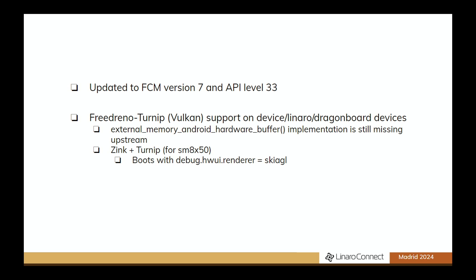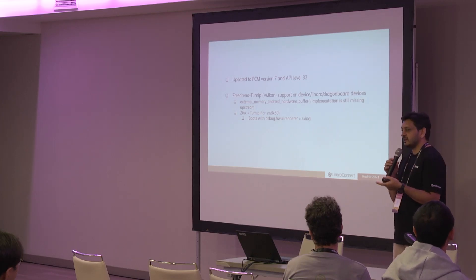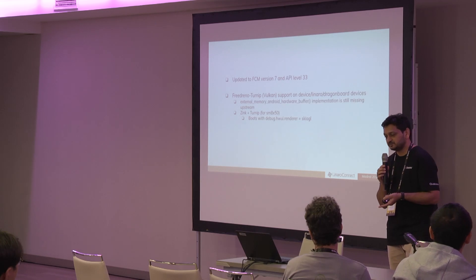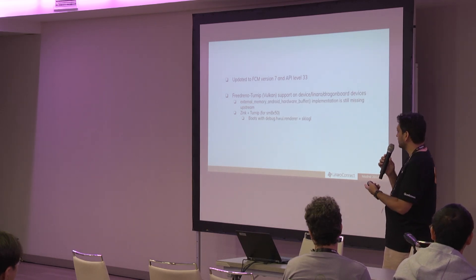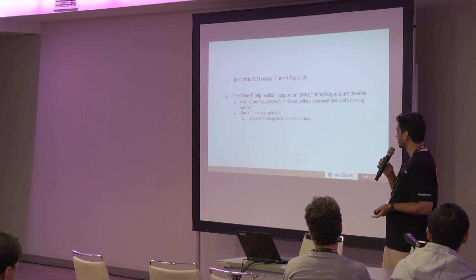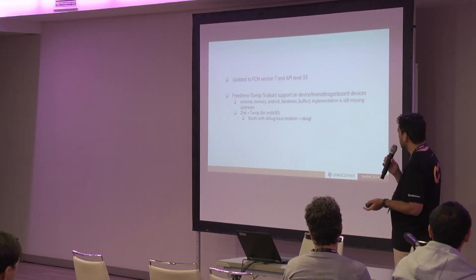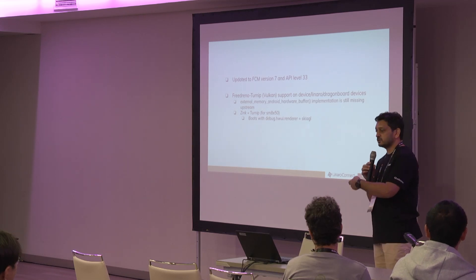Right now we can switch on Vulkan support and fall back to Skia GL for hardware UI rendering, and that's exactly what we are doing for 8550. Because 8550, 8450, and 8650 don't have GLES support in Freedreno — they use Vulkan. One quick update: last week Rob Clark rebased a set of patches that implements Android hardware buffer support in Freedreno. We haven't tested it yet, but if it works out, we will switch all our devices to Vulkan.